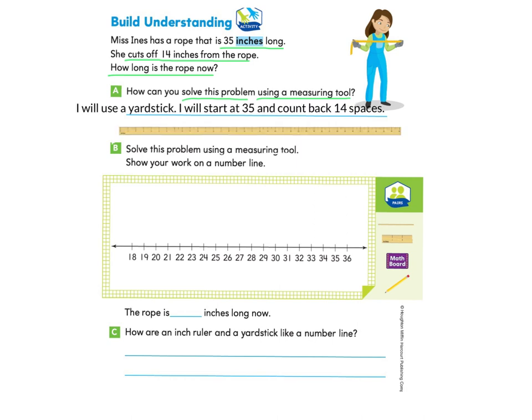One tool we can use is a yardstick, and the plan would be that we would start at 35 because there are 35 inches on a rope, and then we would count backwards 14 spaces because 14 inches were cut from the rope. Part B asks us to solve this problem using a measuring tool and show your work on a number line. You can pause and try to solve this problem using your yardstick, starting at 35 and counting backwards 14 spaces, and then come back and follow along with me on the number line.